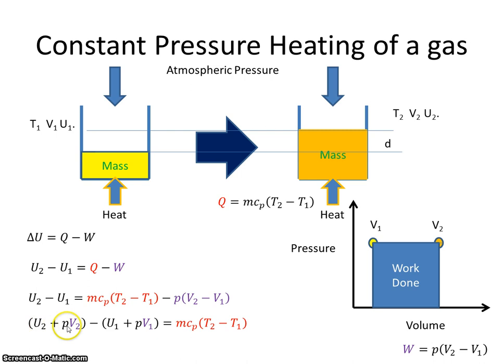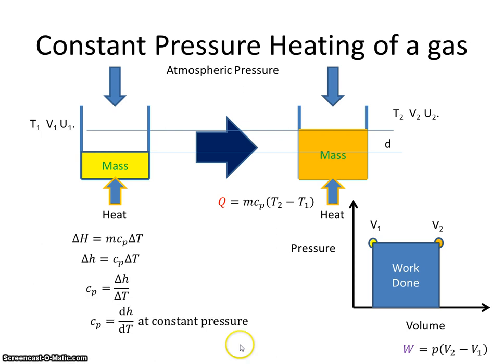Well, internal energy plus pressure times volume, we call that enthalpy. So I can say that the change in enthalpy, H2 minus H1, is equal to M specific heat capacity constant pressure times T2 minus T1. So we've just seen that the change in enthalpy is the mass times specific heat capacity constant pressure times the change in temperature.